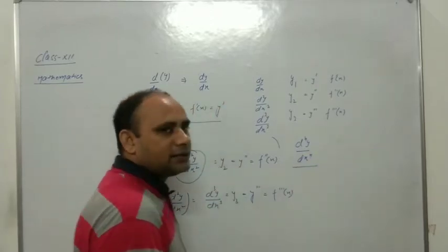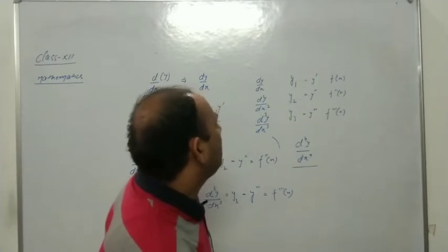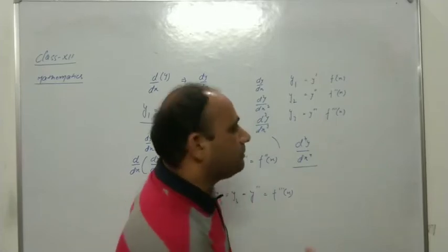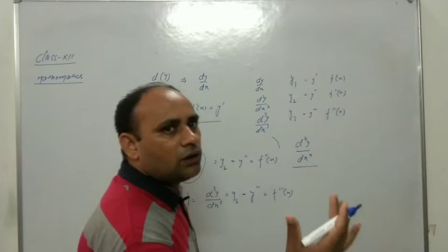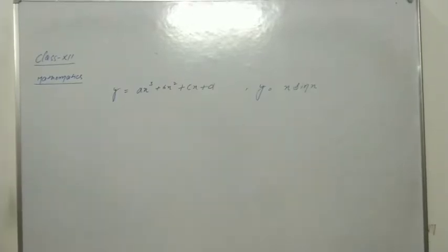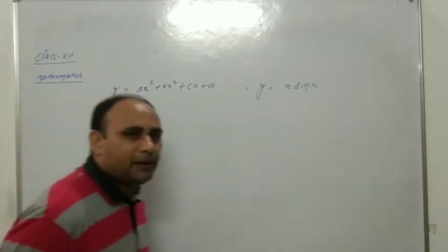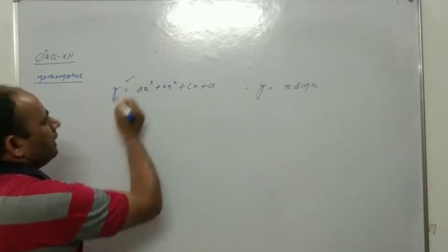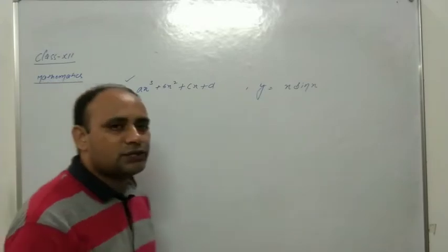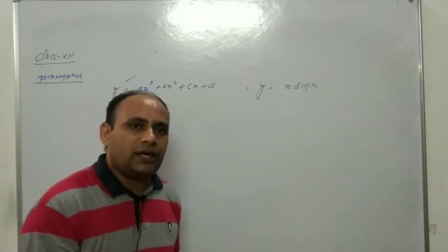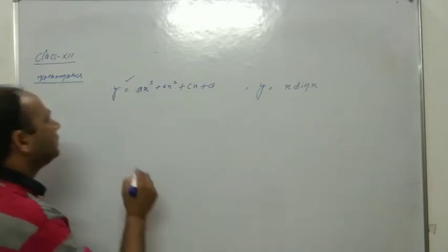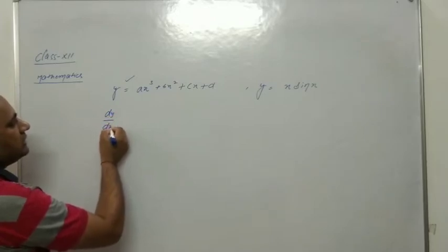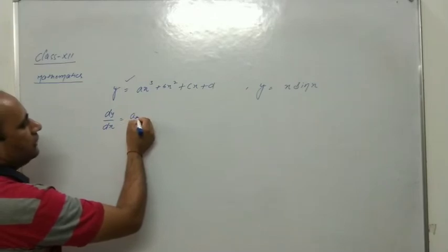The nth derivative you will read in higher classes. In class 11/12 (A+2), we go only up to second derivative, or at most one or two problems up to third derivative. Now some examples depend on first, second, or third derivative. First example: find the second derivative of y = ax³ + bx² + cx + d.